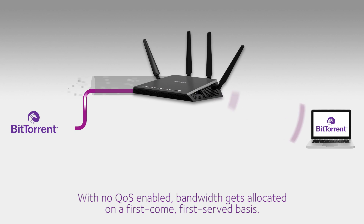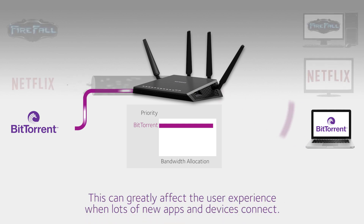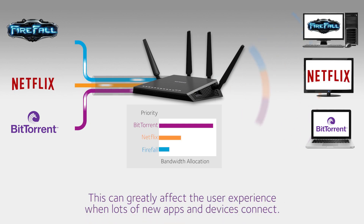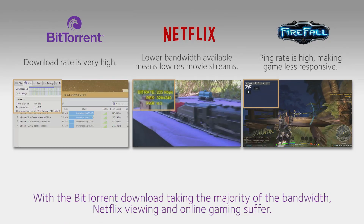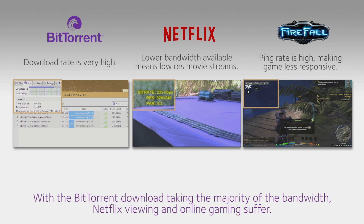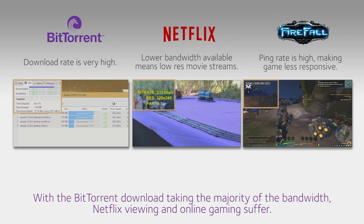With no QoS enabled, the X4 router simply allocates bandwidth on a first-come, first-served basis. This can greatly affect the user experience when lots of new apps and devices connect. With the majority of the bandwidth taken up by a BitTorrent download, Netflix viewing and online gaming suffer.